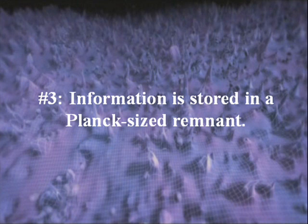The third option is that the black hole shrinks down and there is a Planck-sized remnant left over, and all the information is stored in that. This puts an arbitrary amount of information into a tiny amount of stuff, and so this also violates the Bekenstein bound, and so this one cannot be an alternative either.